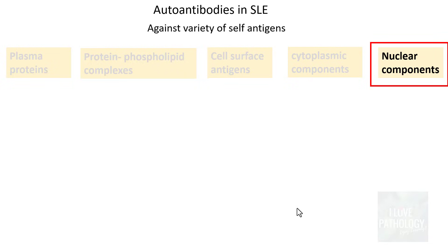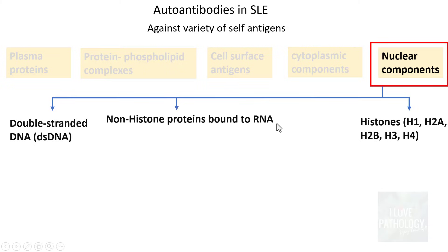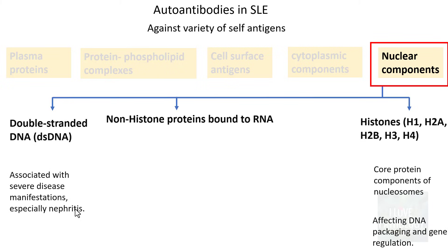Now the most important part — anti-nuclear antibodies (ANA) in SLE. Antibodies can develop against double-stranded DNA, against histones H1, H2A, H2B, H3, and H4, and against non-histone proteins bound to RNA. Antibodies against double-stranded DNA are associated with severe disease manifestations, especially nephritis. Antibodies against histones affect DNA packaging and gene regulation, as histones are core protein components of nucleosomes.